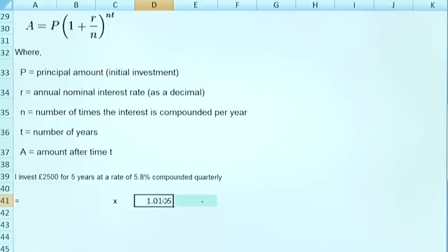So R is the 5.8% interest and the 4 is the quarterly compounding. So that comes through at 1.0145. We've then got the two and a half thousand pound investment and this generates 3,532 pounds.